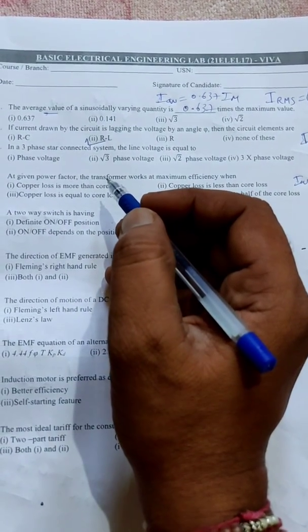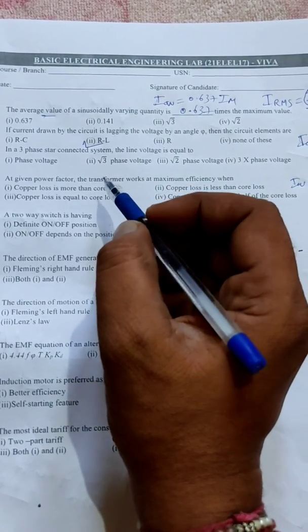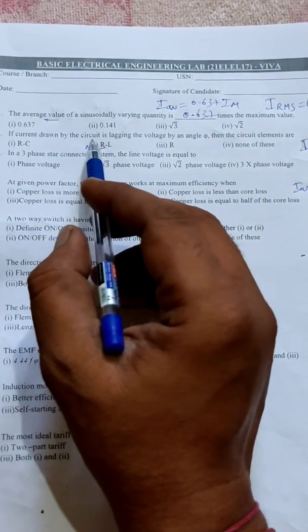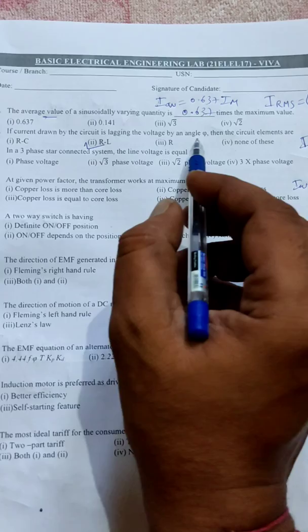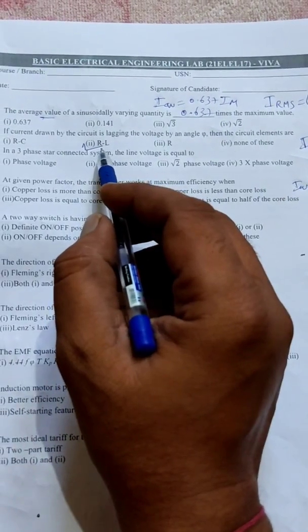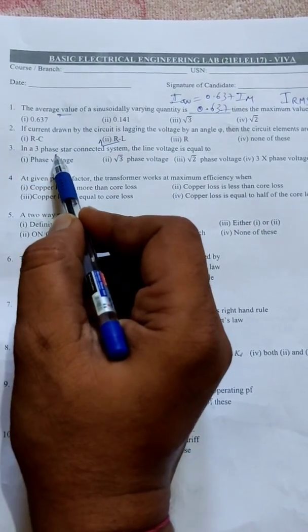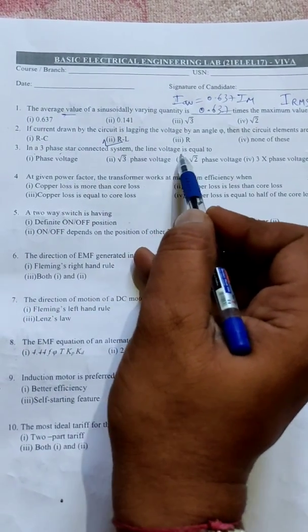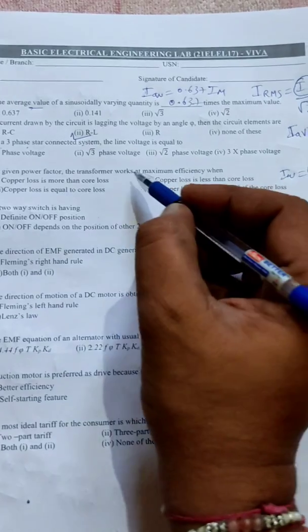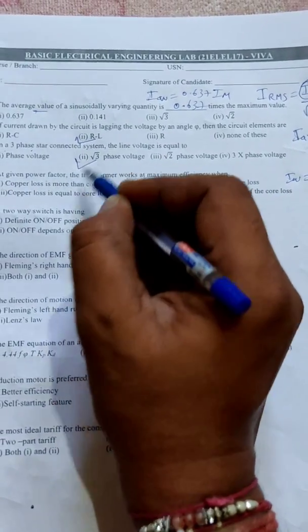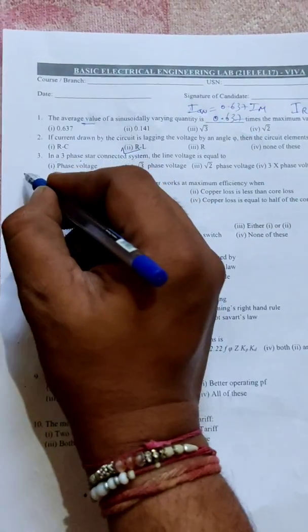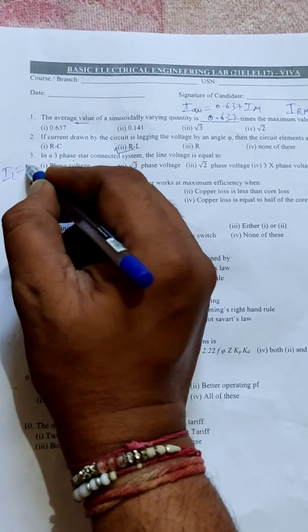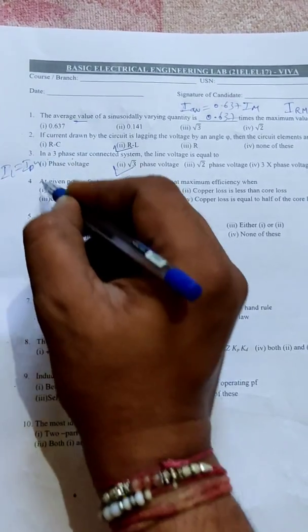Next, in a three-phase star connected system the line voltage is equal to this one, root 3 times of phase voltage. In star, currents are same - line current and phase current are equal, but line voltage is root 3 times of phase voltage.